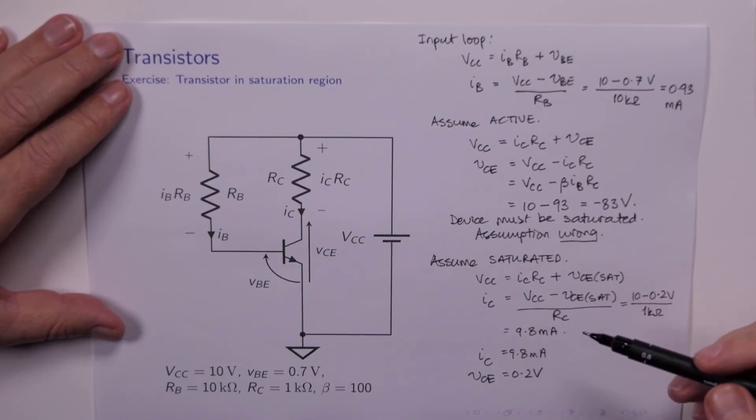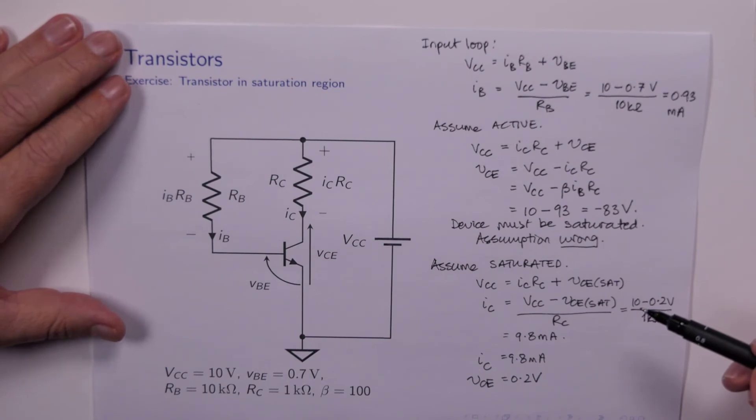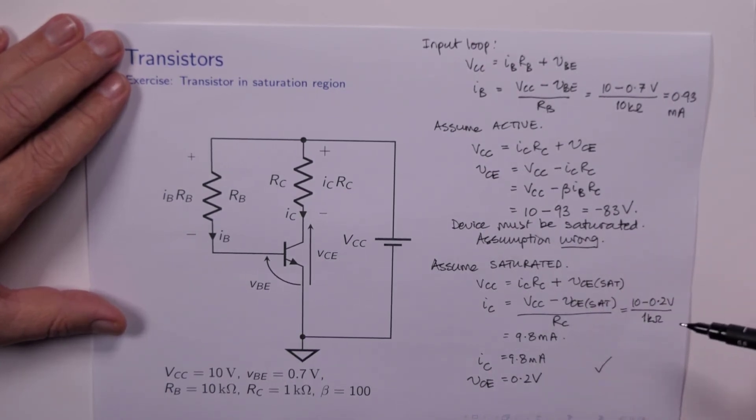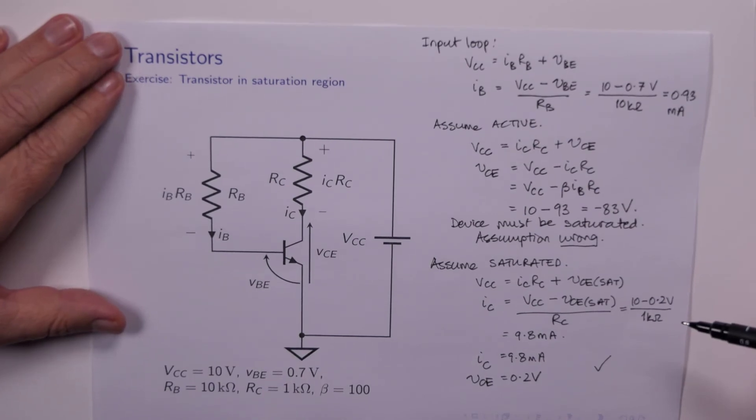That's a given, really, since we've assumed that it's saturated. I don't see anything wrong with these numbers. The currents aren't flowing in the wrong direction. Voltages don't have the wrong polarity. Everything looks OK.